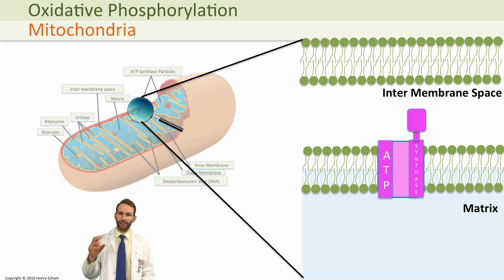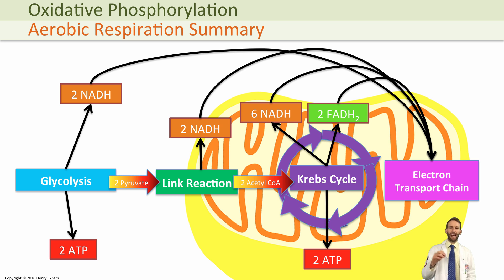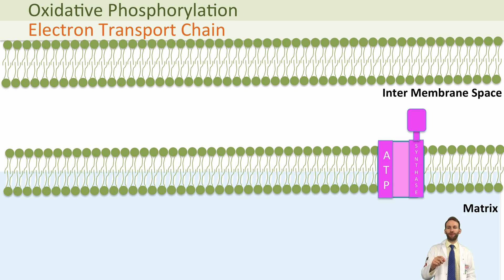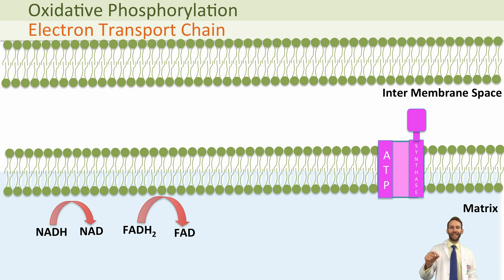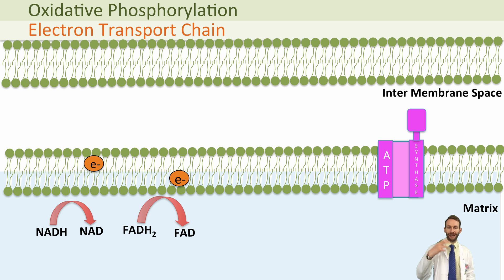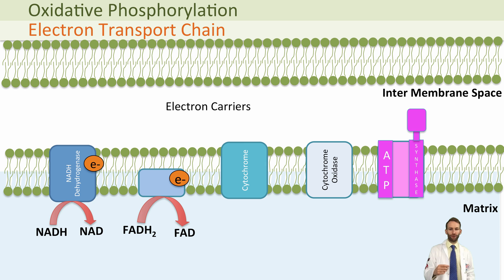During glycolysis, the link reaction, and the Krebs cycle, FAD and NAD molecules get reduced. This means that they've accepted electrons and hydrogen ions, which they are now carrying. In the electron transport chain, these electron carriers are then going to be oxidized back to their original form. So NADH is going to go back to NAD, and FADH2 is going to go back to FAD, and when they do that they give up their electrons to electron carriers in the electron transport chain.